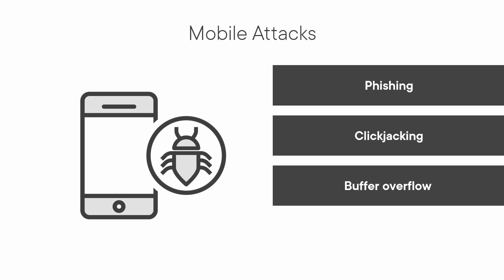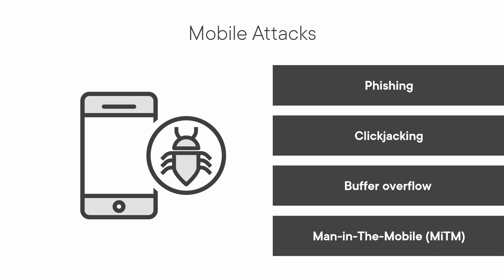We also have buffer overflows — writing data to overflow the buffer an application has reserved can produce some really interesting results. Then there's the Man-in-the-Mobile attack. The attacker implants code into the victim's phone or device to bypass password verification systems — typically those that send one-time passwords or SMS messages to validate that credentials are correct — allowing the attacker to intercept those messages.